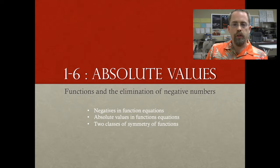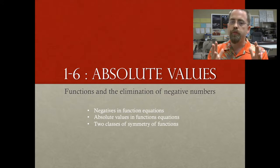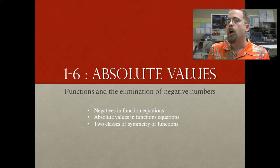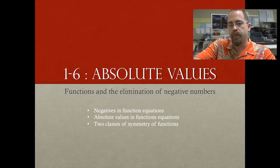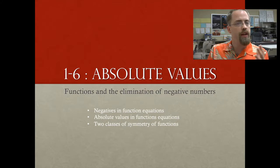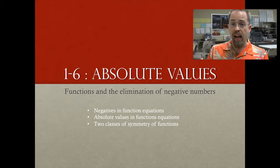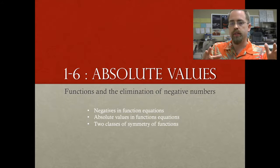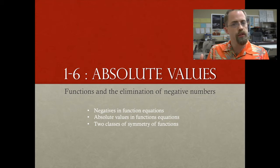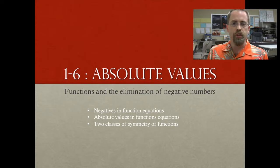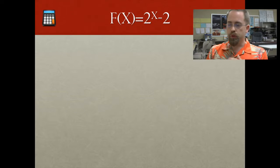Today, we are going to talk about doing things to functions. Now, we've been doing things to functions. We've been adding and multiplying on the inside of f of x and on the outside of f of x. So we've got these function equations that we've been adding and multiplying. And now, we're going to add negatives and absolute values, both inside and outside.